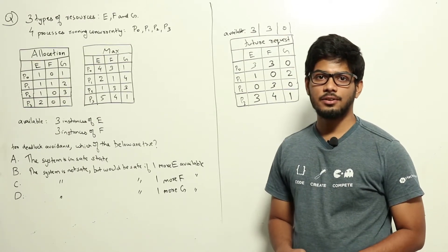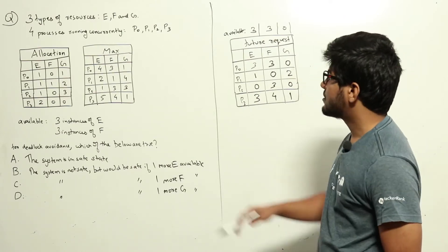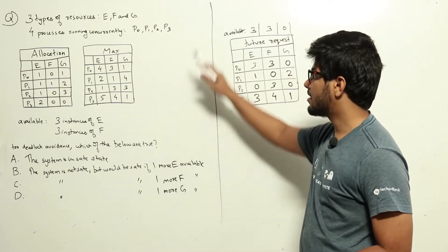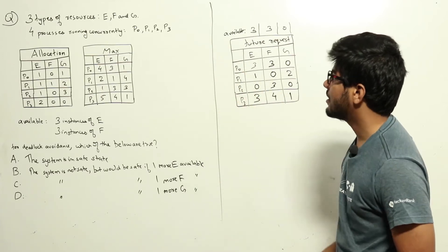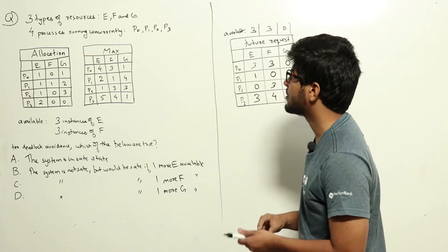This is a question on Banker's algorithm for deadlock avoidance from operating systems. The question text was very large, so I've written only the summary. For the entire question text, please refer to the question paper.